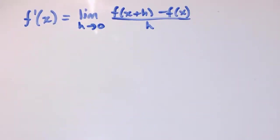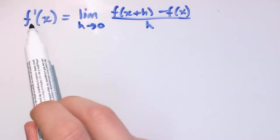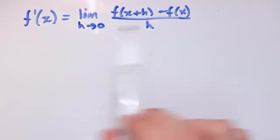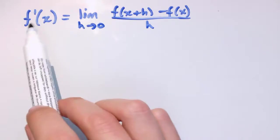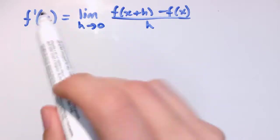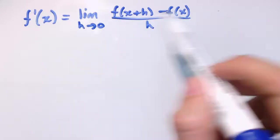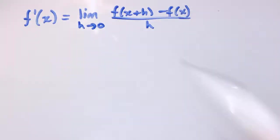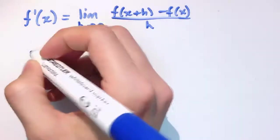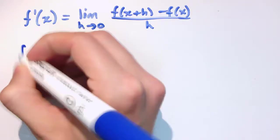In this video I'm going to show you how to work out the gradient formula, or the derivative from first principles, for a number of functions. I'm going to assume that you're happy that the derivative f'(x) is the limit as h tends to 0 of f(x+h) minus f(x) all divided by h. There's a video previous to this one that covers where this formula comes from. Let's apply this to a first function.